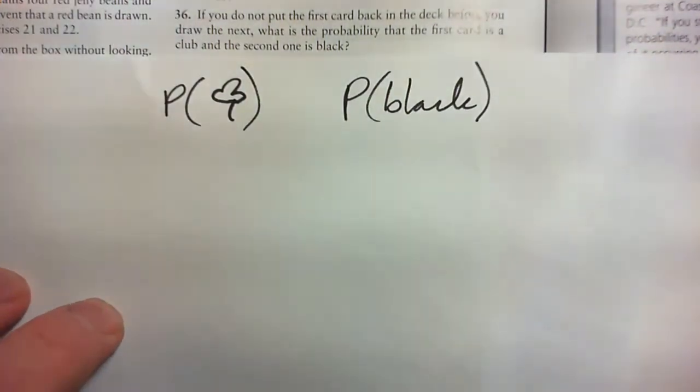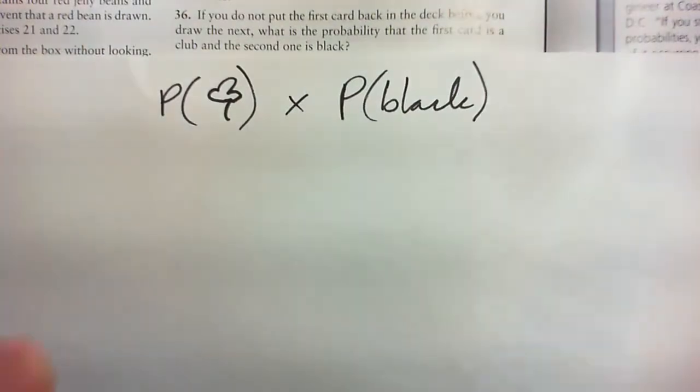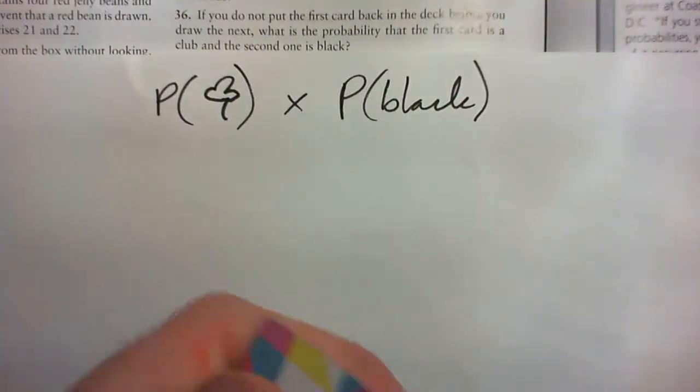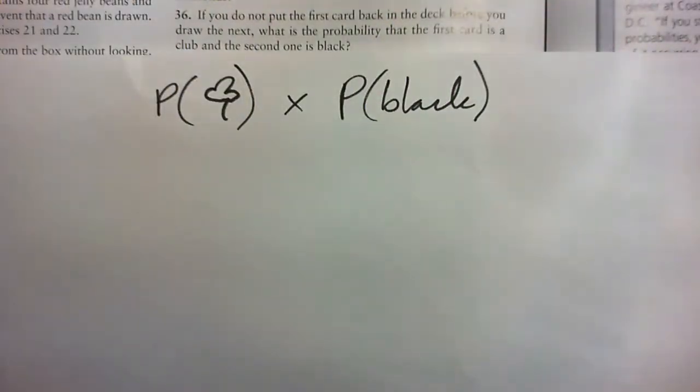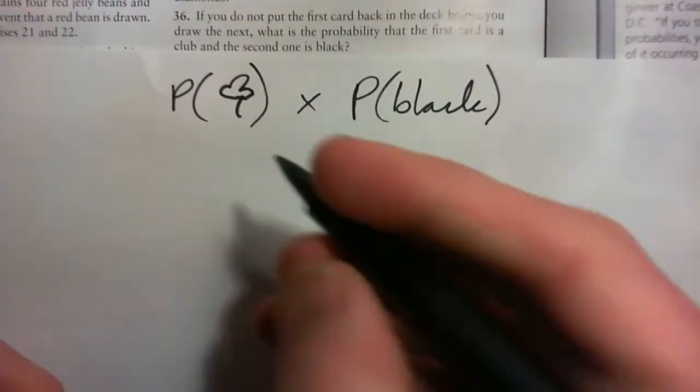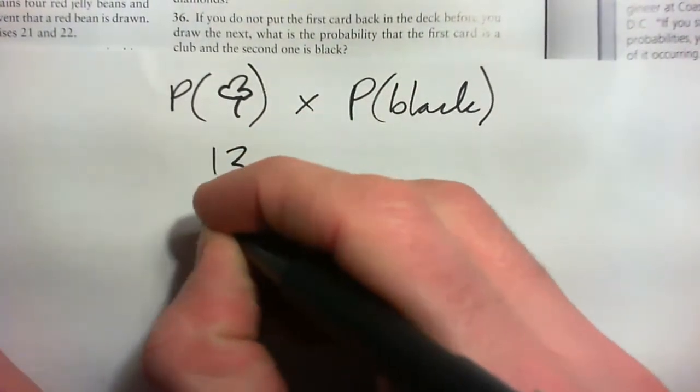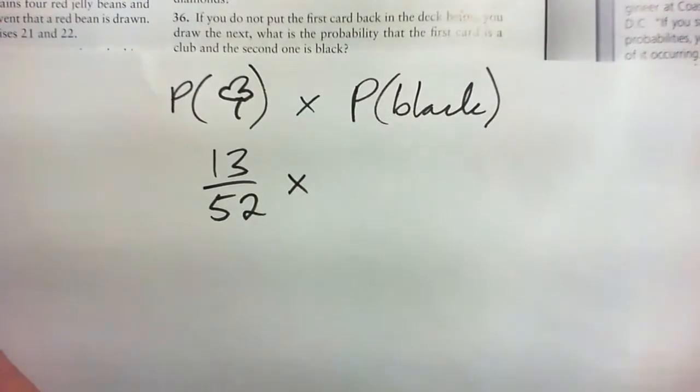And to get the combined probabilities we multiply them. Now the deck is well shuffled, we pull out a club, imagine we just pull out this club card here. We pull it out. Now the chances of that happening would be 13 out of 52, or one quarter.